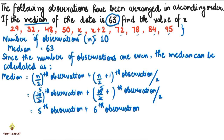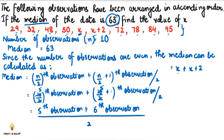Upon 2. Now, counting the observations: 1, 2, 3, 4, and 5 — so what is our 5th observation? The 5th observation is x, and the 6th observation is x plus 2, divided by 2. Now, what is our median given? It is 63.